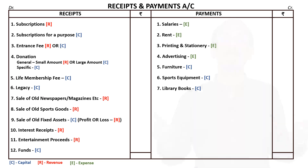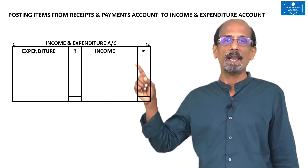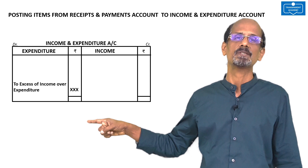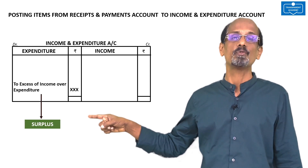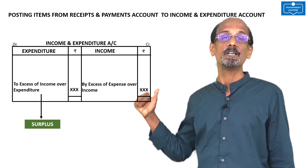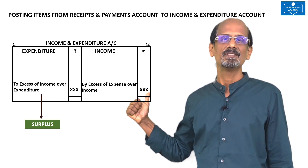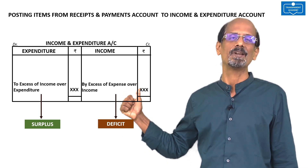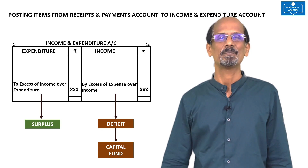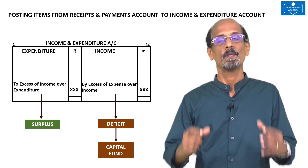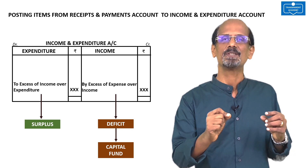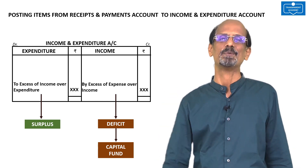When you balance the income and expenditure account, if you get the balance on the debit side, it will become a surplus — excess of income over expenditure. If you get the balance on the credit side, it is a deficit — excess of expenditure over income. That will be transferred to capital fund. This is how you prepare an income and expenditure account from the receipts and payments account.